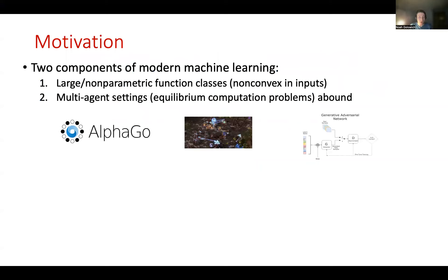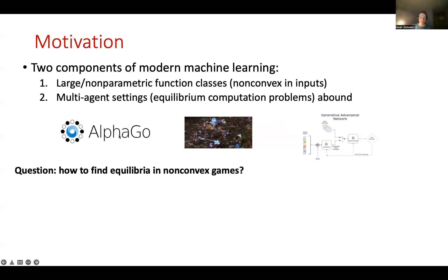There's been a couple of common themes of modern machine learning. One of these is the use of large or nonparametric function classes, such as those given by neural networks, and often these are things that are very non-convex in their inputs. The second is that there are many multi-agent settings where multiple agents interact in a game and the goal is to find some equilibrium. This raises the question: how do we find equilibrium in the sorts of non-convex and large games that arise in modern machine learning?